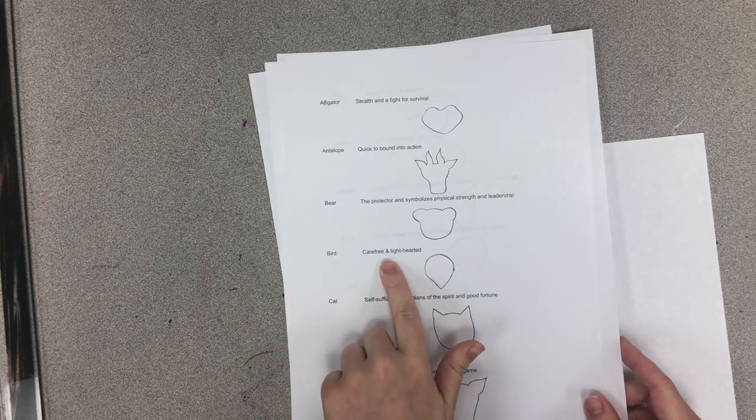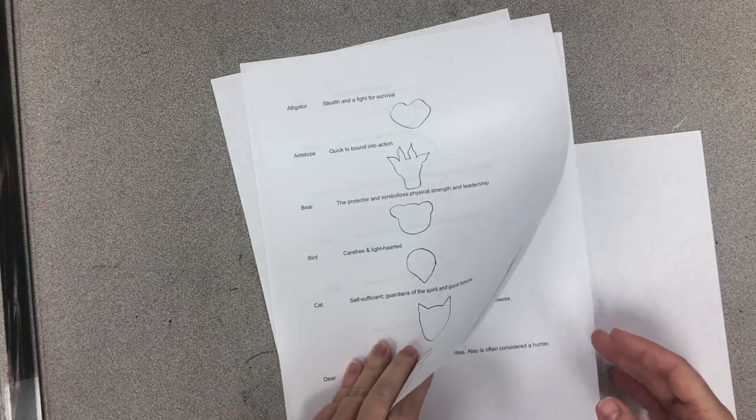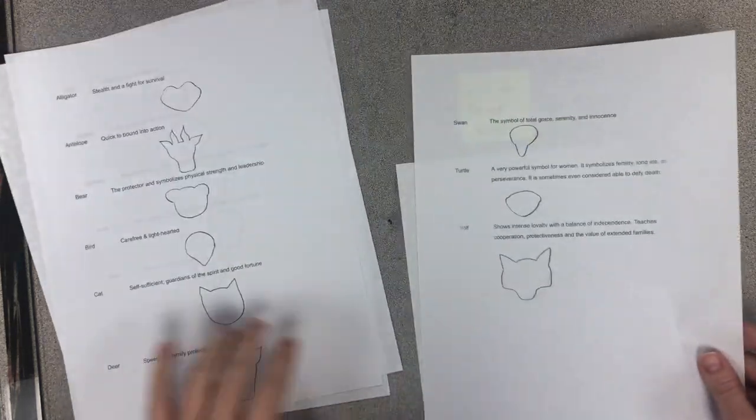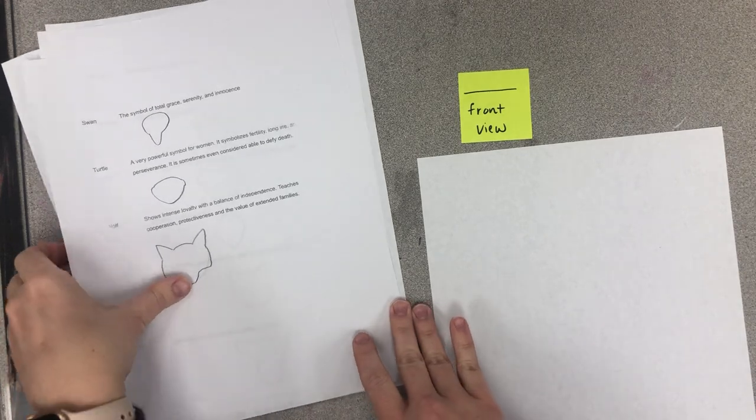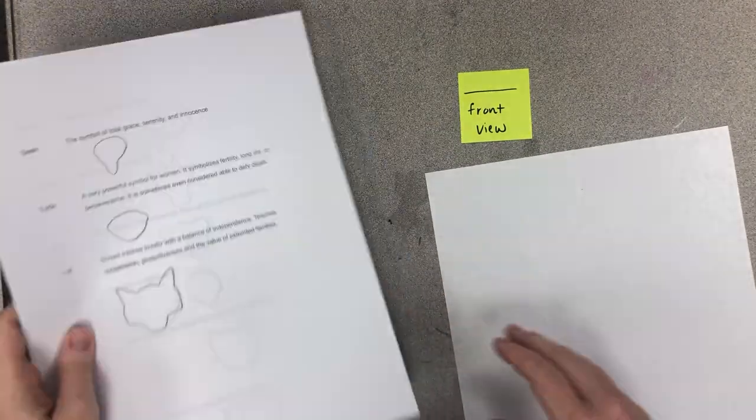So example, bird is carefree and lighthearted. I've already picked one for me. I want to do a wolf. It says a wolf shows intense loyalty with a balance of independence. It sounds like me, so I'm going to kind of go with it.